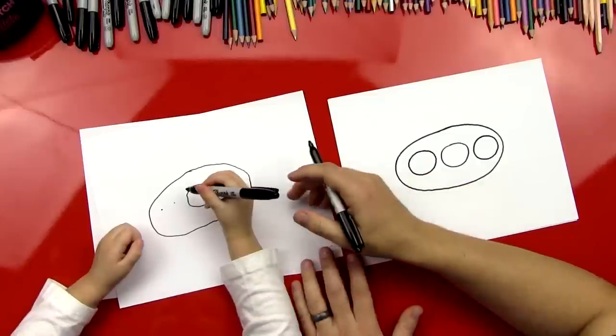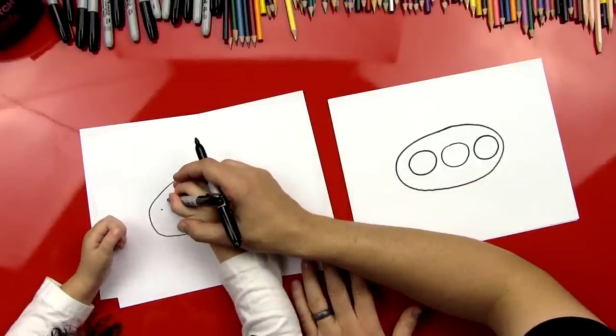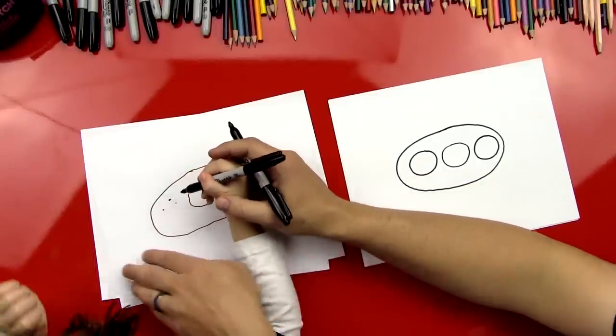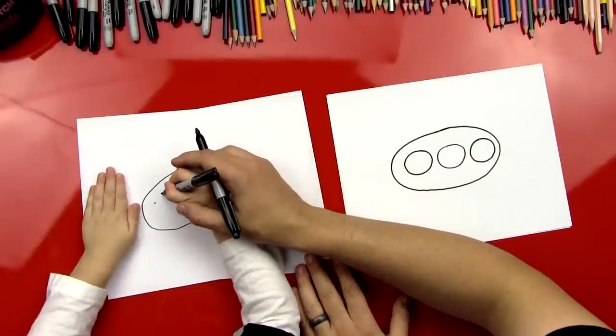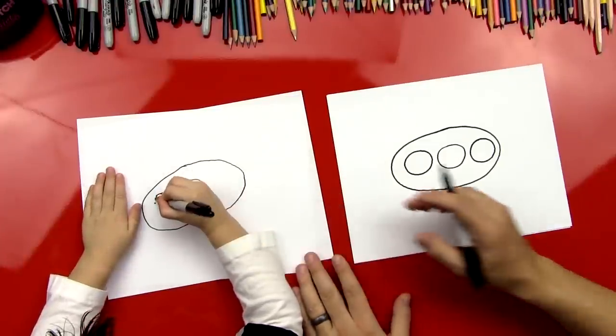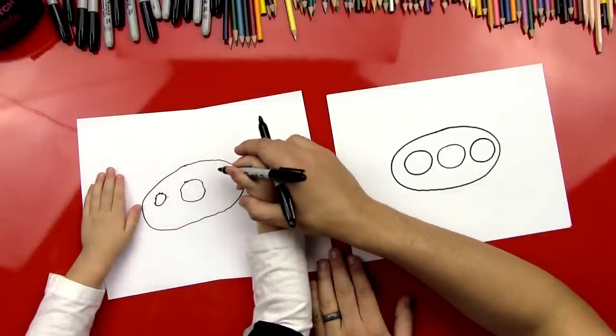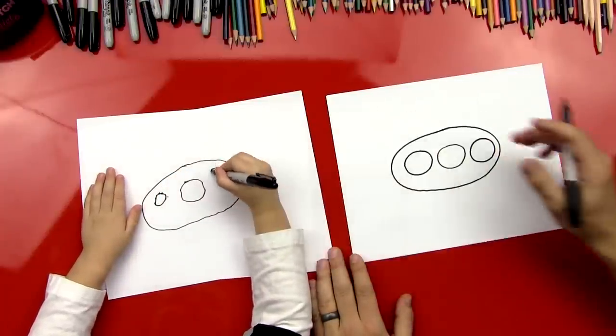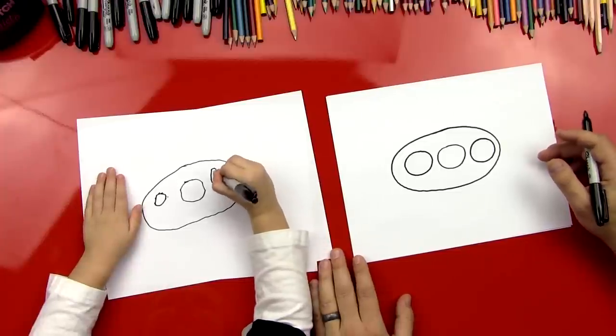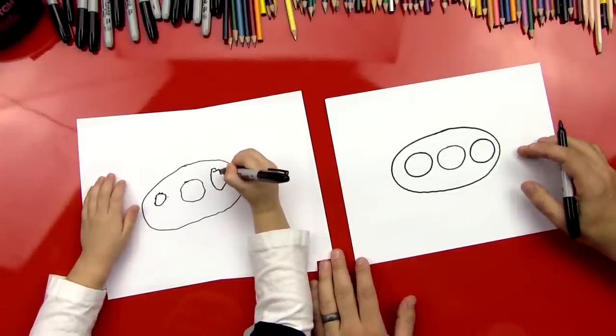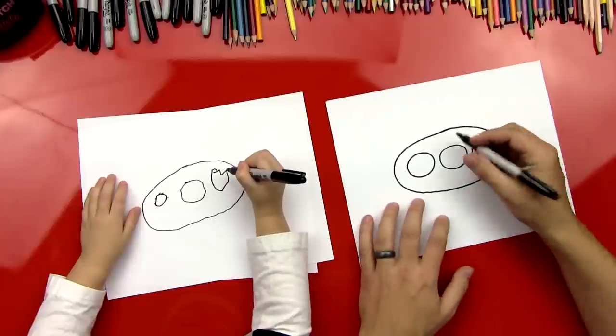You did it and then can you do another circle right next to it? Like that and then another circle over here. Hold your paper with your other hand. Good job, you did it and then do another circle right here. It's a little smaller. It's bumpy, all right.